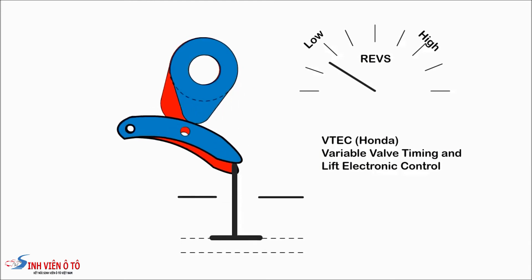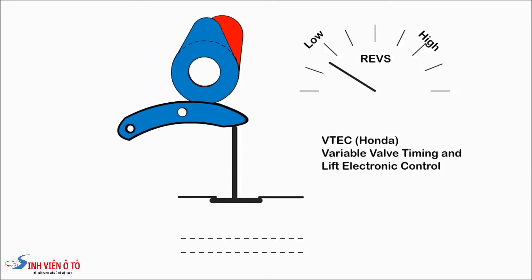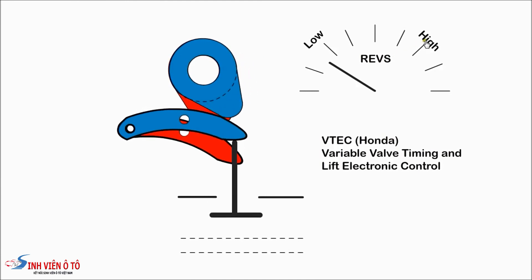With VTEC, the camshaft has two separate lobe profiles. The valve is in contact with the blue rocker arm. At low speed, the cam operates on the standard profile for efficiency.